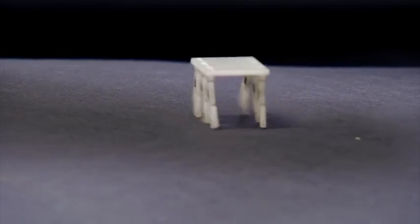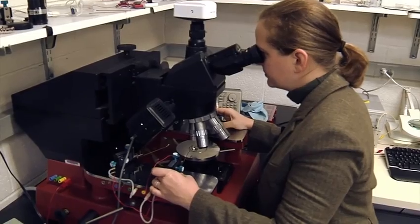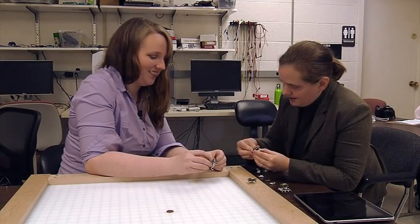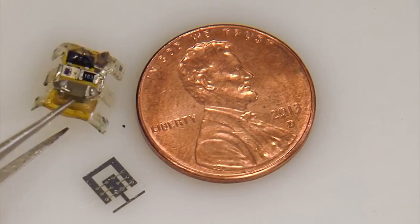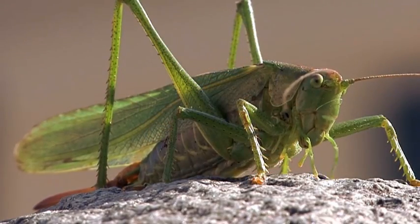What if robots could have the same moves? With support from the National Science Foundation, engineer Sarah Bergbreiter and colleagues at the University of Maryland are building micro-robots, using insects as inspiration, starting with their legs.